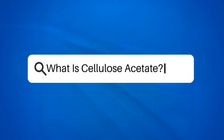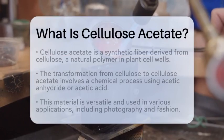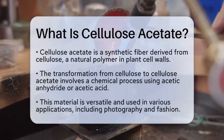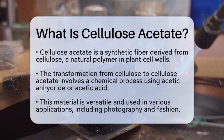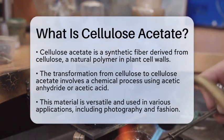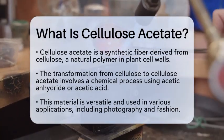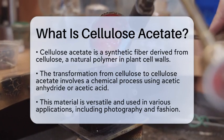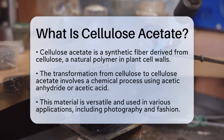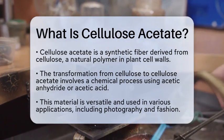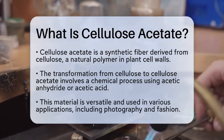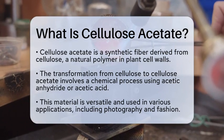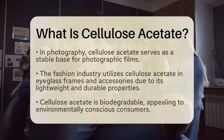What is cellulose acetate? Imagine a material that plays a role in everything from photography to fashion. This substance is known as cellulose acetate, a type of synthetic fiber derived from cellulose, which is a natural polymer found in the cell walls of plants. The transformation from cellulose to cellulose acetate involves a chemical process where acetic anhydride or acetic acid is used to modify the cellulose structure.